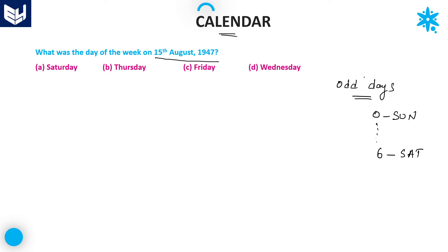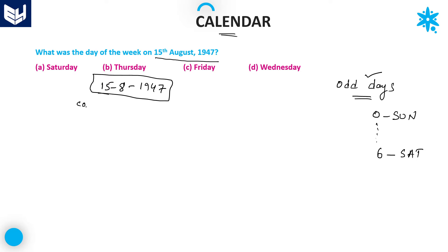First of all, we need to find the number of odd days in 15th August 1947. You need to divide this entire date into two parts. The left-hand side is completed years, whereas the right-hand side is the current year or running year. Here, the current year is obviously 1947.